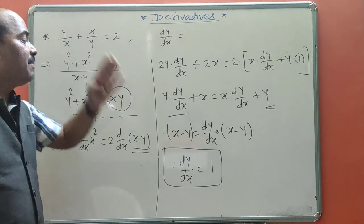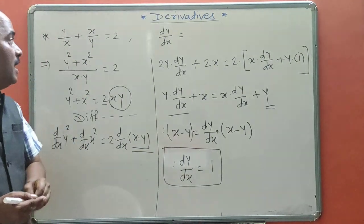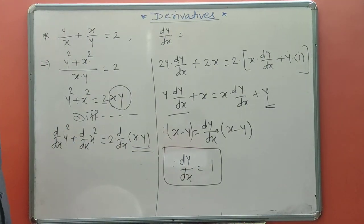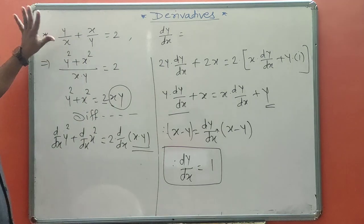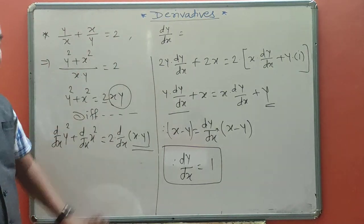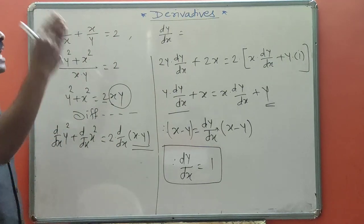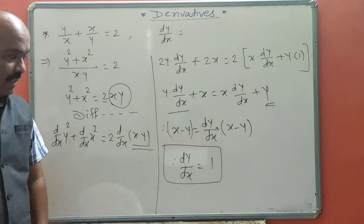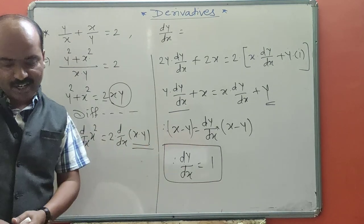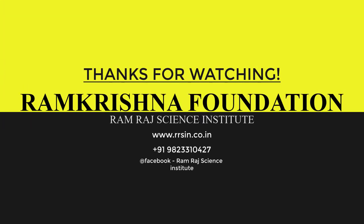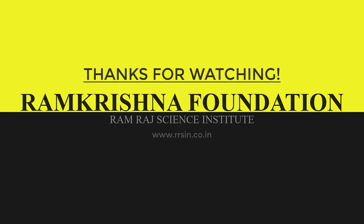This is the derivative of the given function. Remember: sometimes look at the function and simplify it first, then differentiate. This is the approach for finding derivatives of implicit functions.